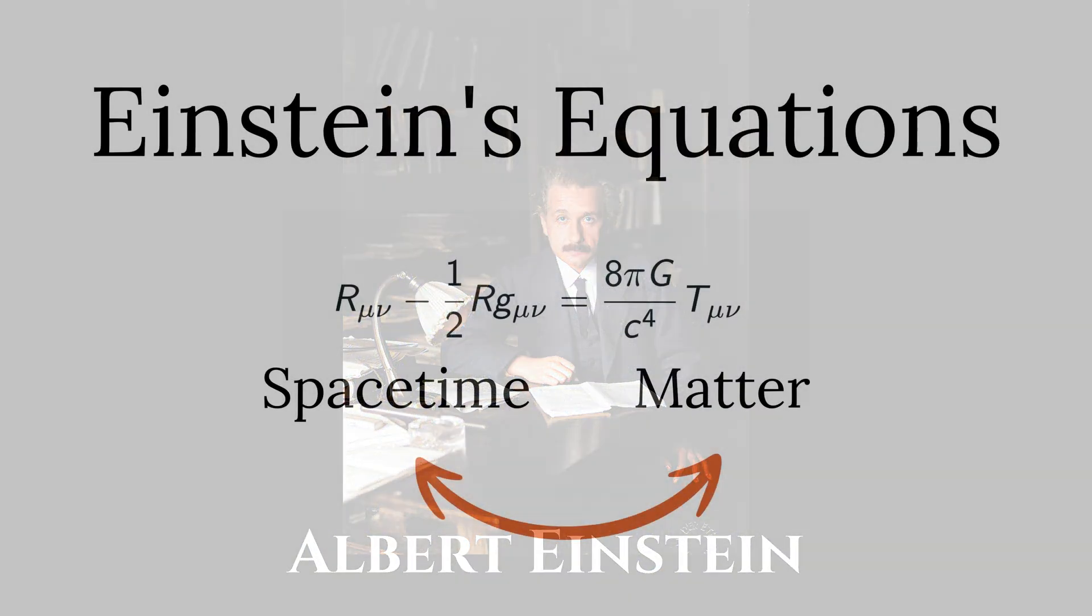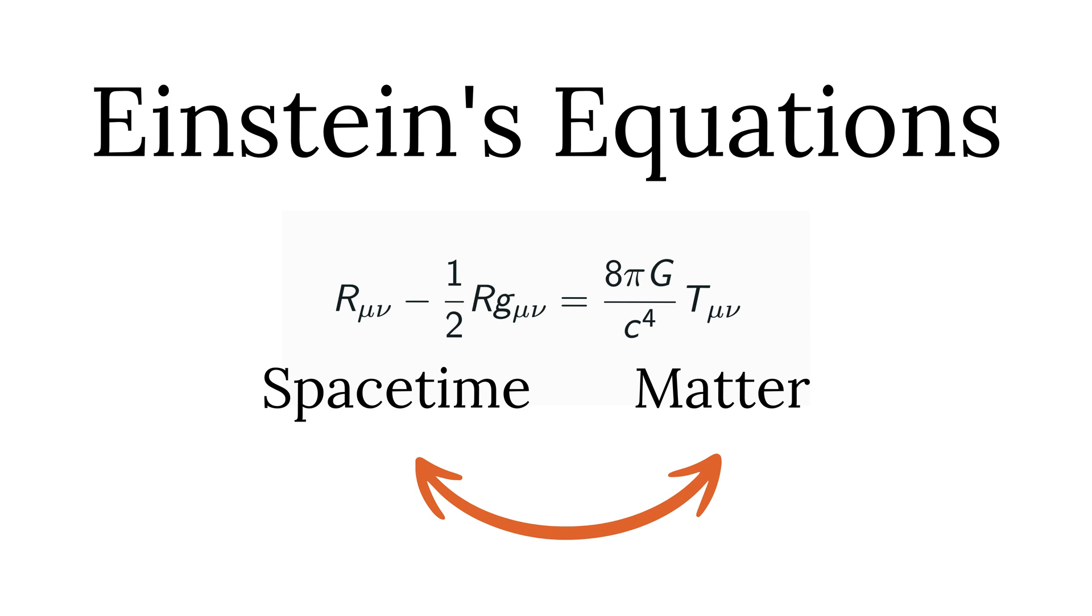Einstein's theory of general relativity was a revision to Newton's law of gravitation. The equations look like this. These objects here are called tensors. You might have noticed I call them Einstein's equations and not just equation. As there are 10 equations hidden inside what's written above. One side of these equations is space-time and the other side is matter.